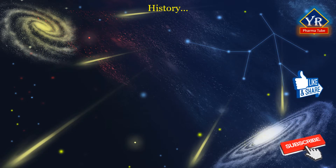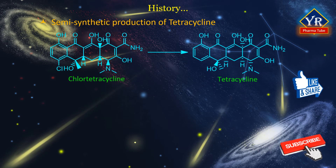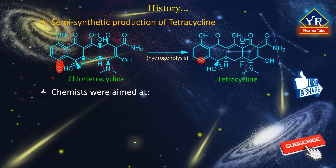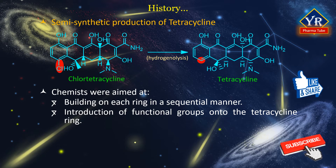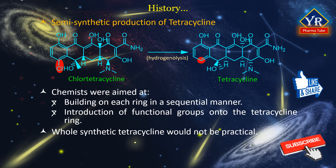The excellent antibacterial properties of the naturally occurring tetracyclines led to attempts to produce semi-synthetic derivatives. The parent compound tetracycline was obtained directly from chlorotetracycline by chemical reduction, i.e. hydrogenolysis, indicating that semi-synthetic modifications were possible. Some chemists devised approaches for the total synthesis of tetracyclines, with some efforts aimed at building on each ring in a sequential fashion. Despite many innovative approaches, only a few total syntheses of prototypic tetracyclines would be realized.